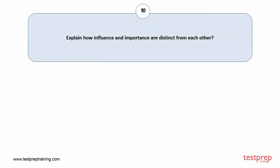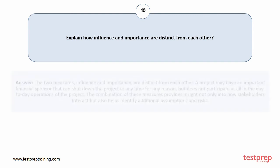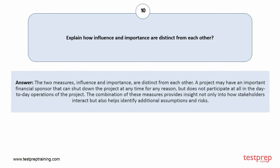Question number 10: Explain how influence and importance are distinct from each other. Your answer is: The two measures, influence and importance, are distinct from each other. A project may have an important financial sponsor that can shut down the project at any time for any reason, but does not participate at all in the day-to-day operations of the project. The combination of these measures provides insight not only into how stakeholders interact, but also helps identify additional assumptions and risks.